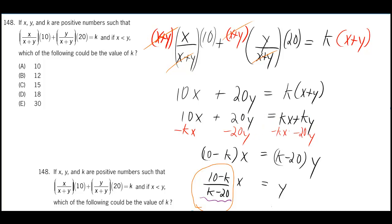In fact, if you subtract 20y from both sides and also kx from both sides, then the kx's will cancel, the 20y's will cancel. You'll just be left with k minus 20 y's, or you could think about, I'm just factoring out a y.